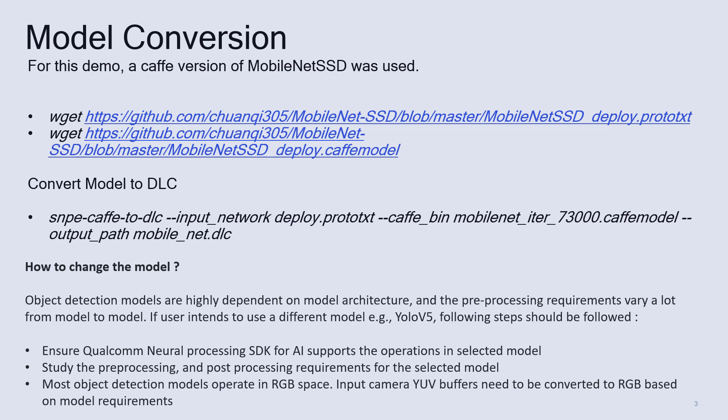If a user wants to change the model with another object detection model, they can very well do so, but they need to keep the following points in mind. We need to ensure that the Qualcomm Neural Processing SDK for AI supports the operations in the selected model.